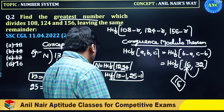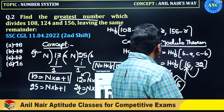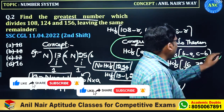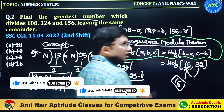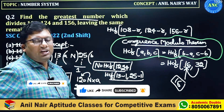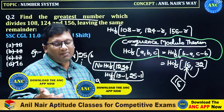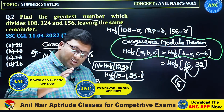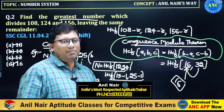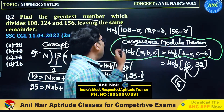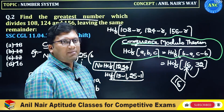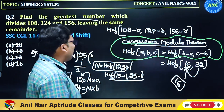The entire idea behind this question is the usage of the congruence modulo theorem. The congruence modulo theorem says HCF of A, B, C is given by HCF of (B minus A) and (C minus B), or HCF of (B minus A) and (C minus A) — all answers will be the same. That is the reason the word is 'congruence': congruence means it will give you the same answer.